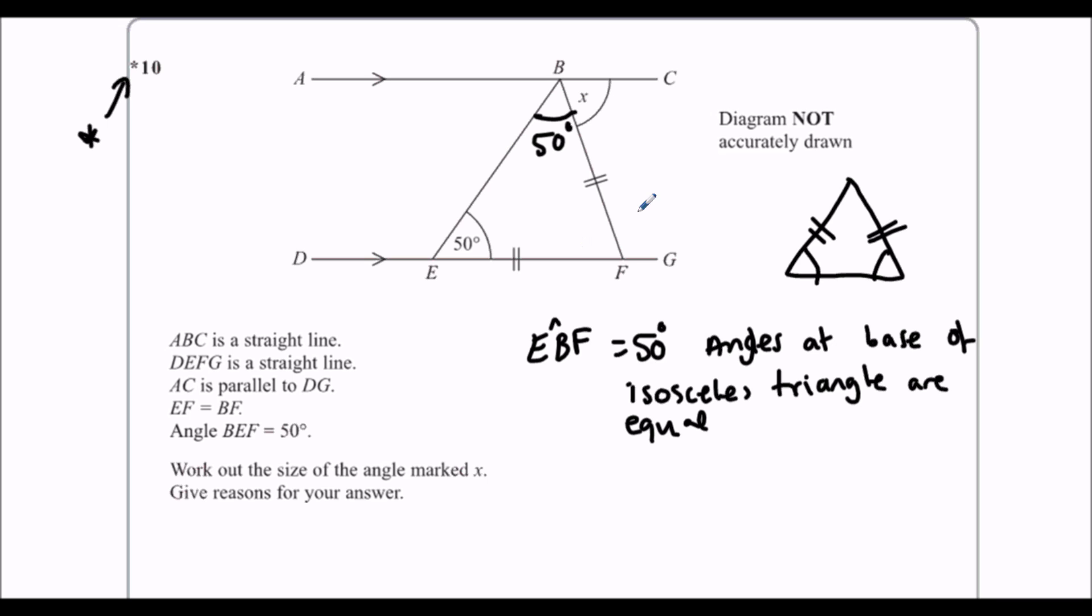Then we're going to say this one here, BFE. We've got a triangle here, and we know the angles in the triangle add up to 180 degrees. So we've already got 100, 50 plus 50. So we need another 80.